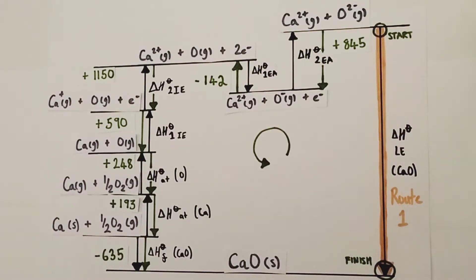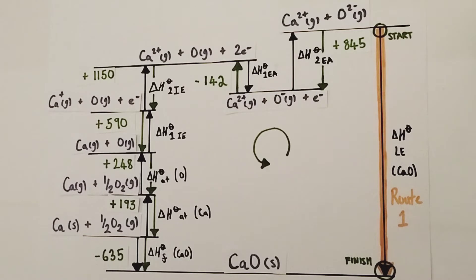So our direct route, which we don't know the enthalpy change for, is in orange here, and that's the lattice enthalpy of calcium oxide. We can take an indirect route via all of these various enthalpy change processes, and ultimately route 2 will get us to the same destination, which is the formation of one mole of calcium oxide. So in theory, according to Hess's law, the route we take will have the same enthalpy change as route 1. So if we work out the enthalpy change of route 2, it will tell us the exact enthalpy change of route 1 as well.